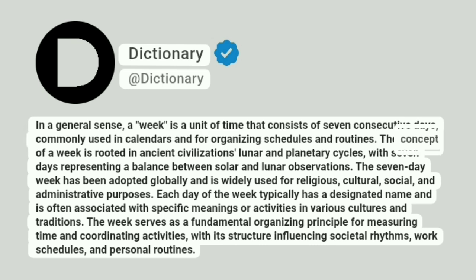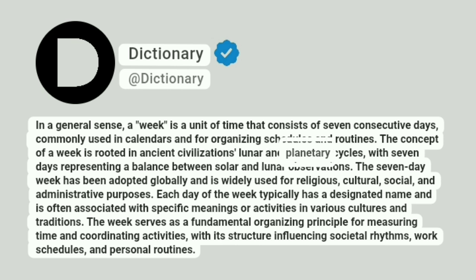The concept of a week is rooted in ancient civilizations' lunar and planetary cycles, with seven days representing a balance between solar and lunar observations.